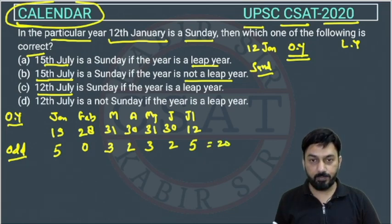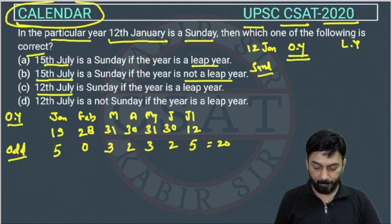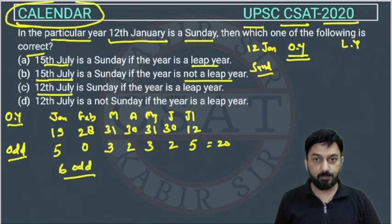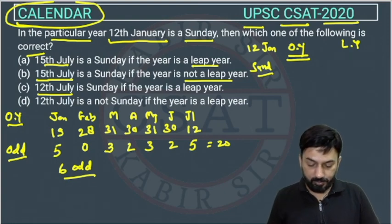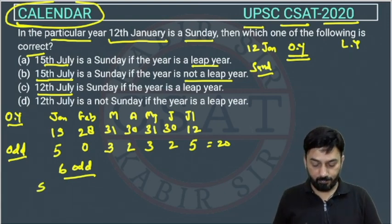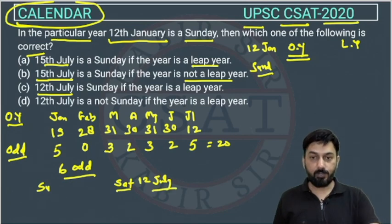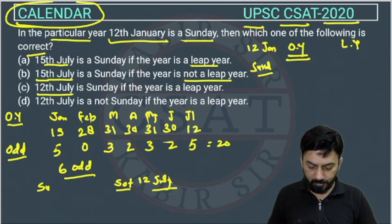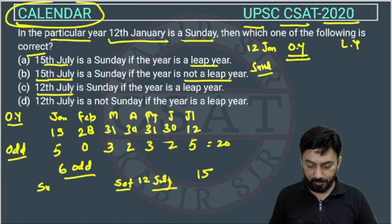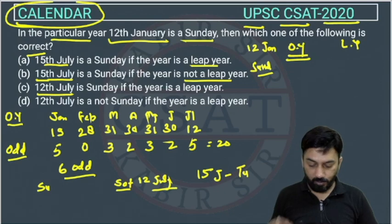Total 20 odd days — 20 odd days means 6 odd days (since 20 mod 7 = 6). Since 12th January is Sunday and there are 6 odd days, 12th July will be Saturday. And what will be 15th July? It is 3 days after 12th July: Saturday → Sunday → Monday → Tuesday. So 15th July will be Tuesday in an ordinary year.